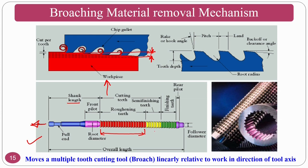The roughening teeth gradually increase in height to remove thin chips progressively. Semi-finishing teeth provide an intermediate surface, while finishing teeth determine the final shape. All three sets — roughening, semi-finishing, and finishing — have the same contour, but the final dimensions are decided by the finishing teeth. The converse contour geometry of the broach is transferred to the final product.